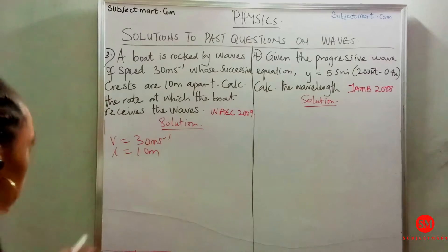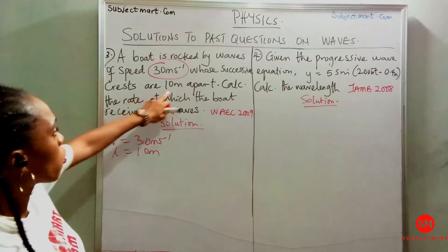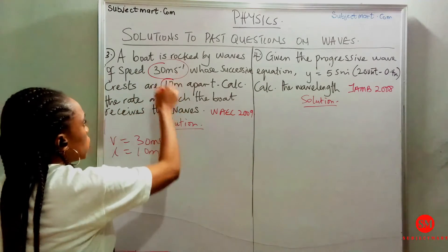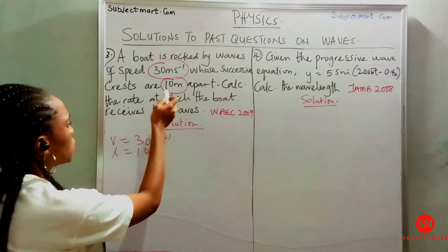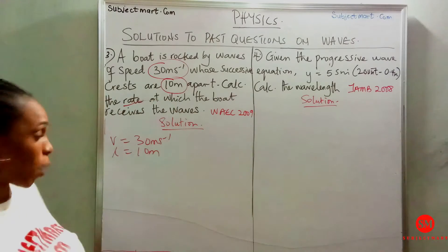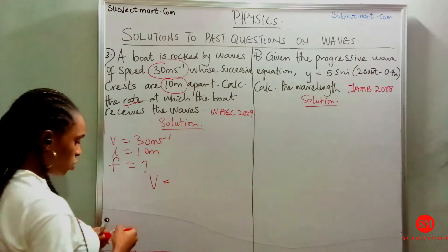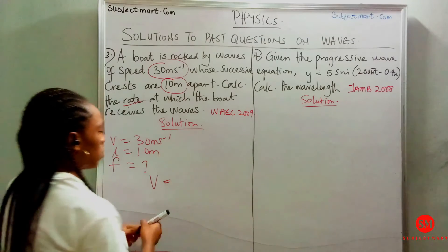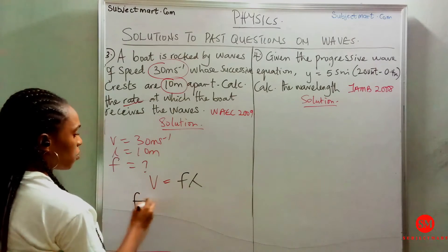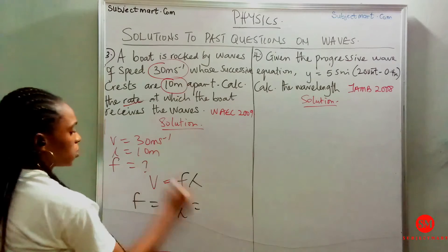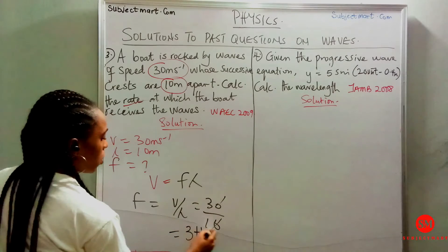The next question says a boat is rocked by waves with a given wave speed. The successive crests are apart — that's the lambda, the wavelength. We are asked to find the rate at which the boat receives the waves, which is the frequency. This is a very direct question, so we just use v equals f lambda. Making f the subject, we have v as 30 and lambda as 10, giving us 3 Hz.